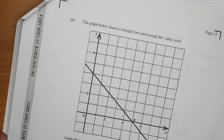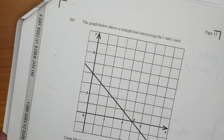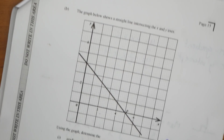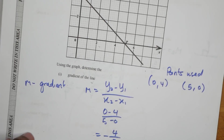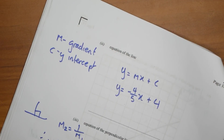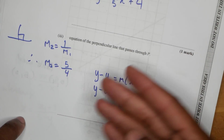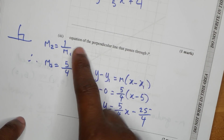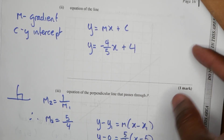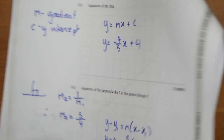Then we had coordinate geometry coming in. Coordinate geometry wasn't that bad — you just had to use the graphs basically. Then the equation of the line — they always ask about a perpendicular or parallel line, and they tried to make it a little clever, but it wasn't that bad.